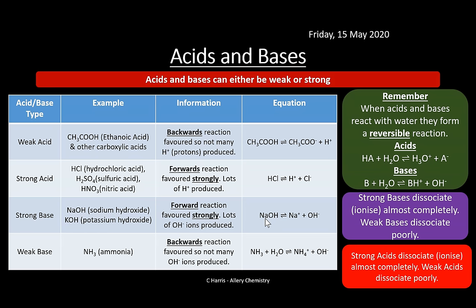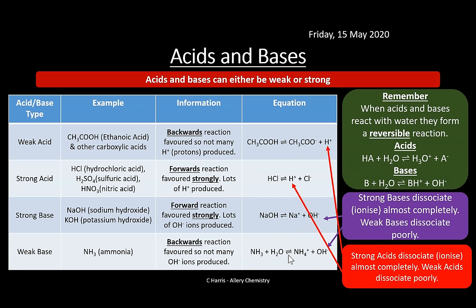Strong bases are chemicals such as sodium hydroxide and potassium hydroxide. For strong bases, the forward reaction is strongly favored - loads of OH⁻ ions are produced. Weak bases - for example, ammonia NH₃ - are a bit unusual in that ammonia actually needs water to produce the OH⁻ ions. Your strong bases have hydroxide groups already attached to them, but ammonia doesn't, so it relies heavily on water. The equilibrium lies well over to the left, with very few OH⁻ ions produced.